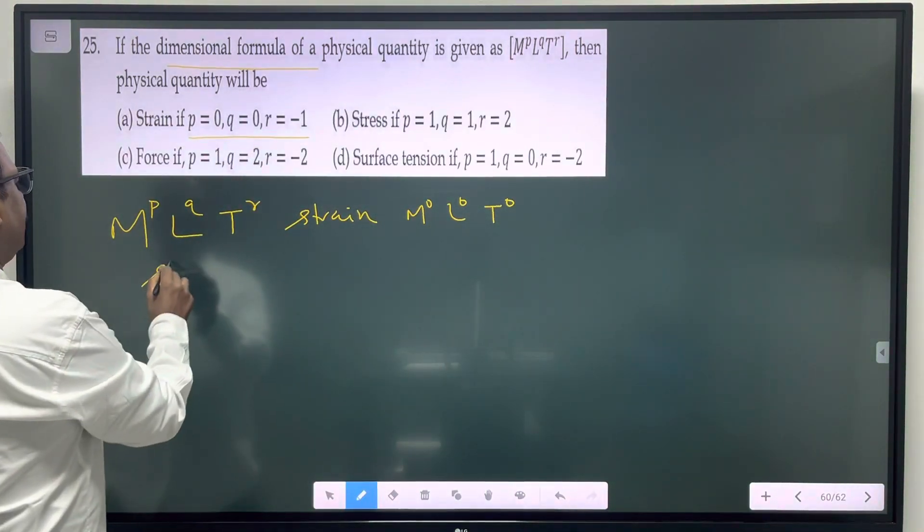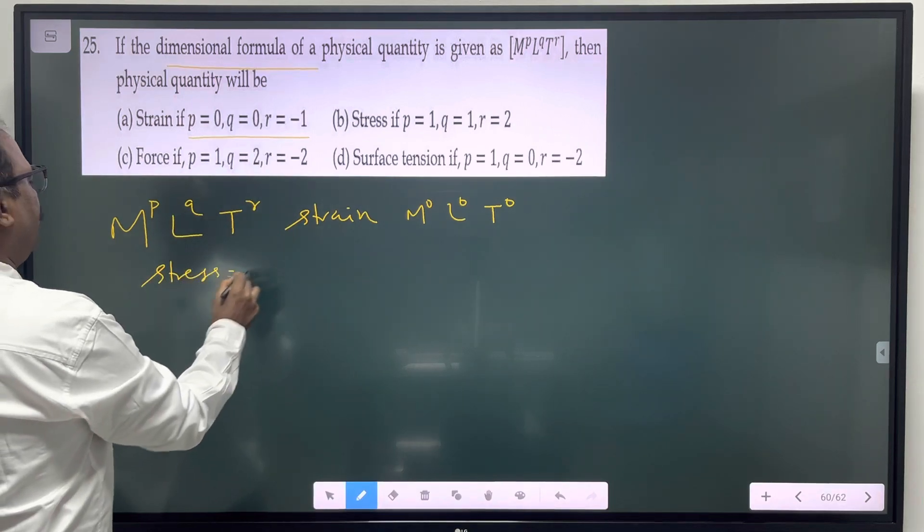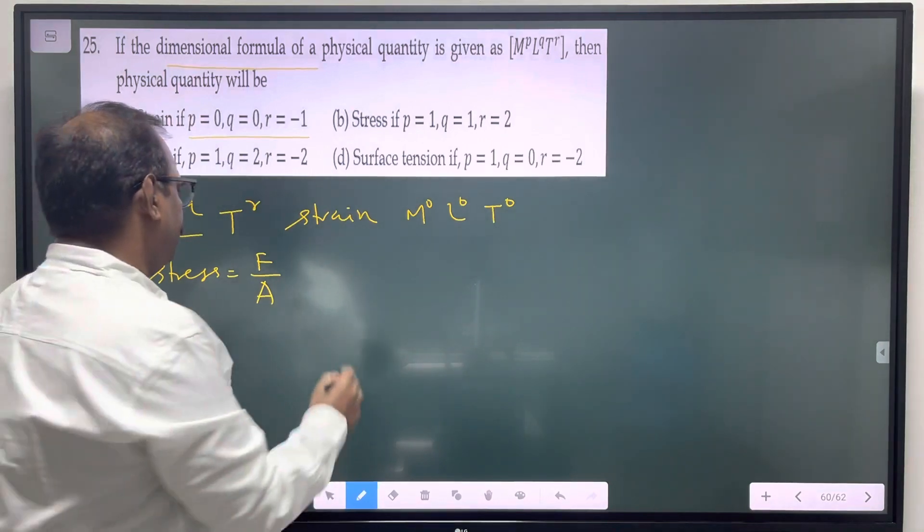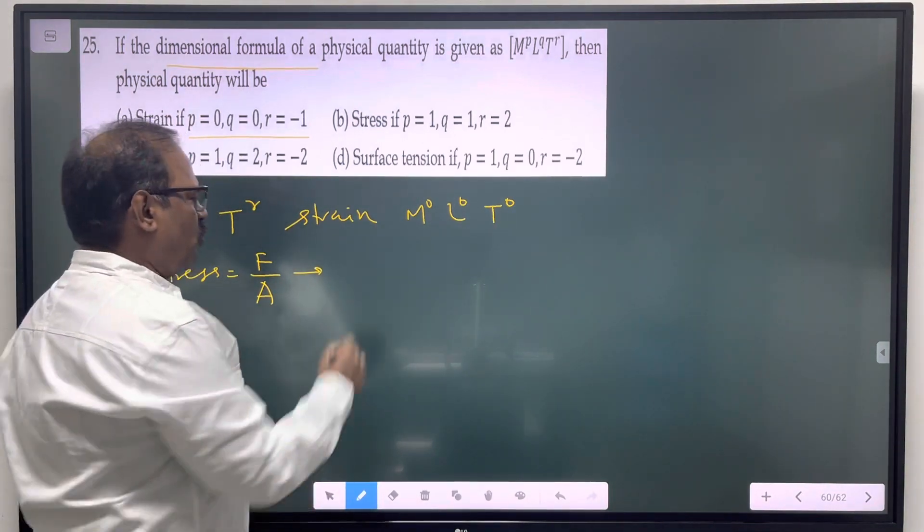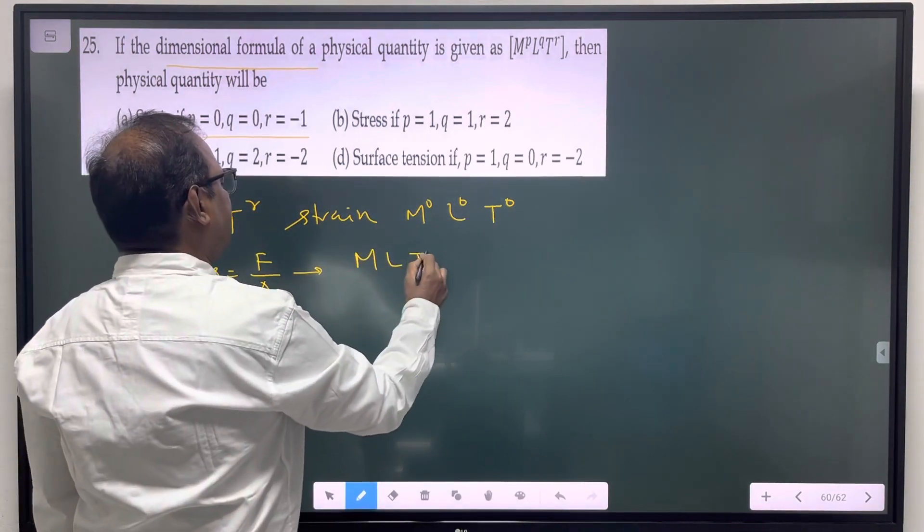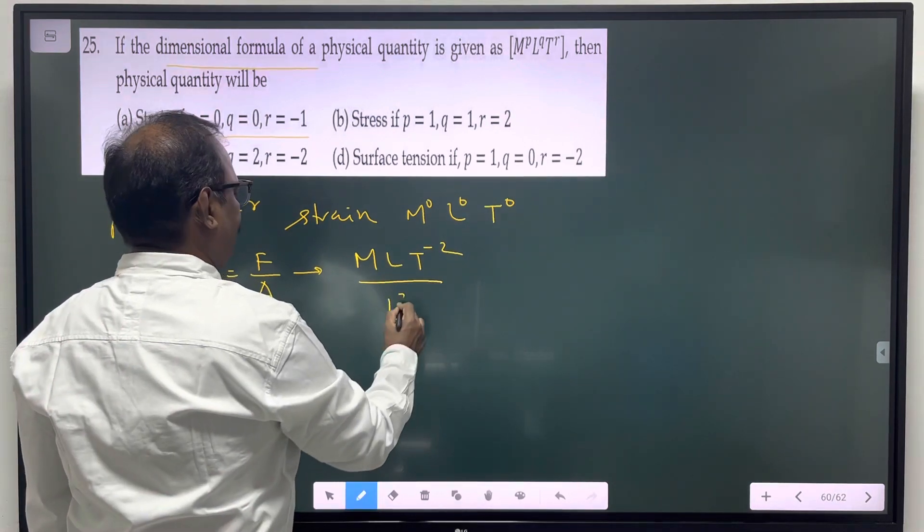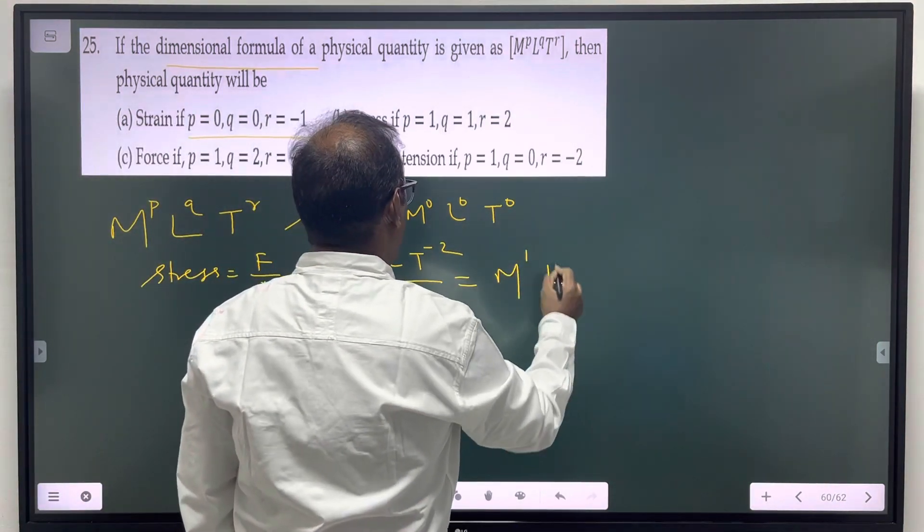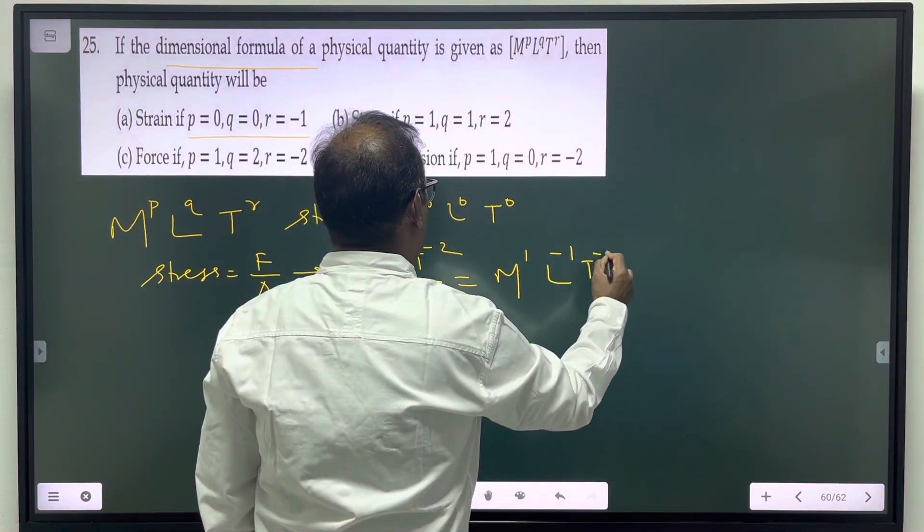If it is stress, stress is force by area. Stress is equivalent to pressure dimensionally. Force is mass into acceleration, area is meter square. So it is M power 1, L power minus 1, T power minus 2.